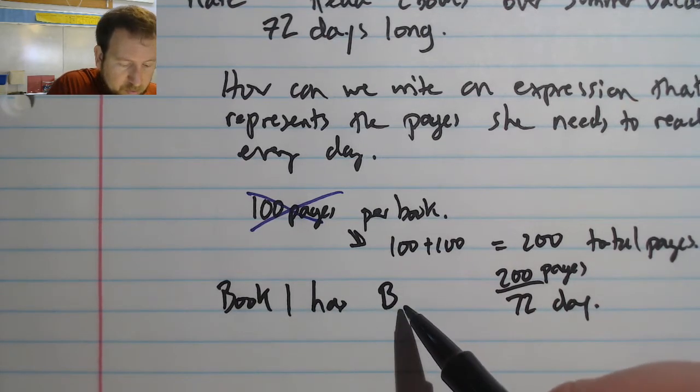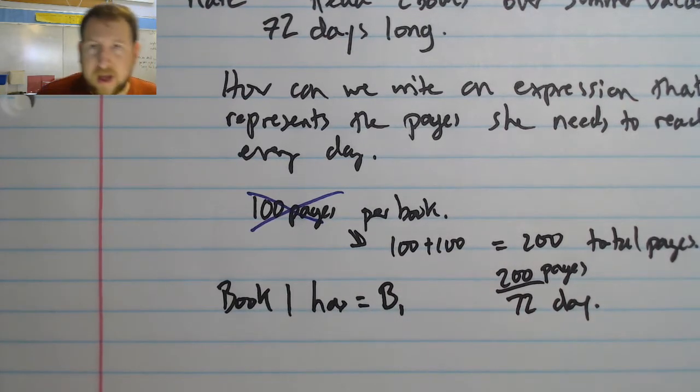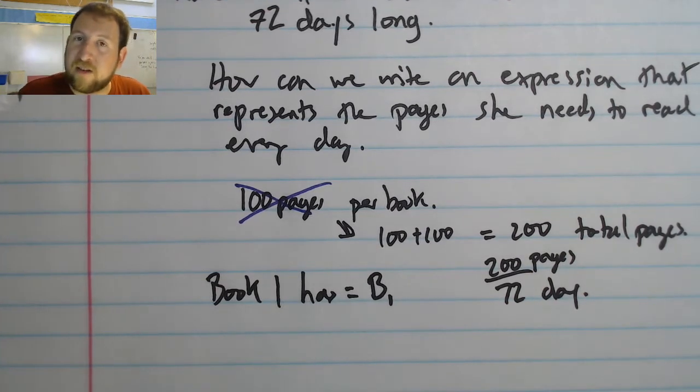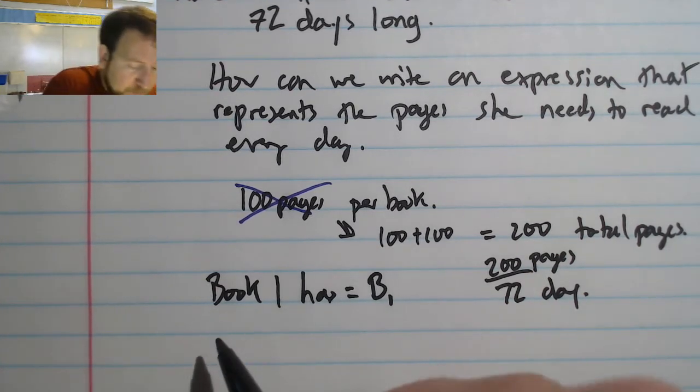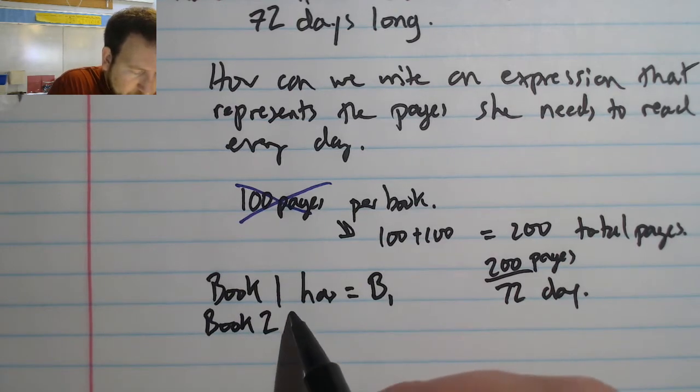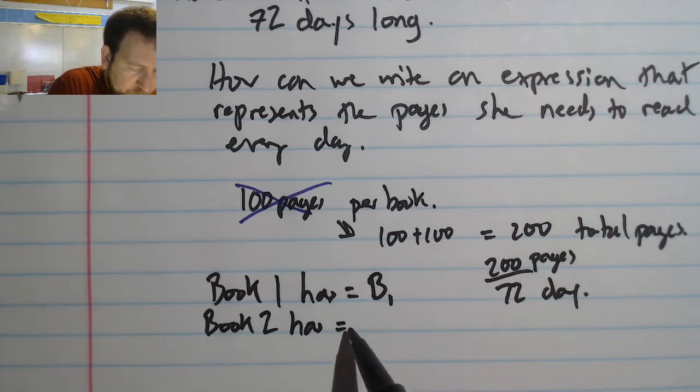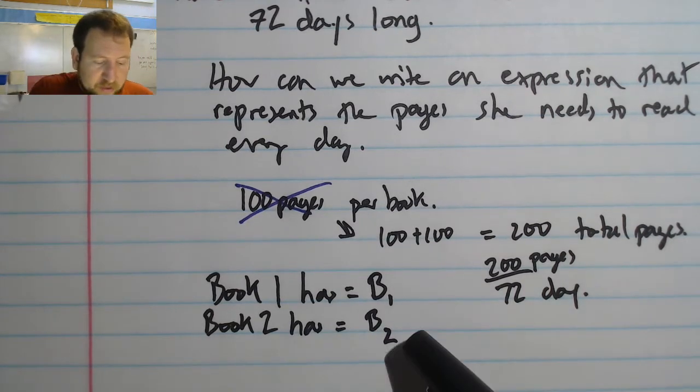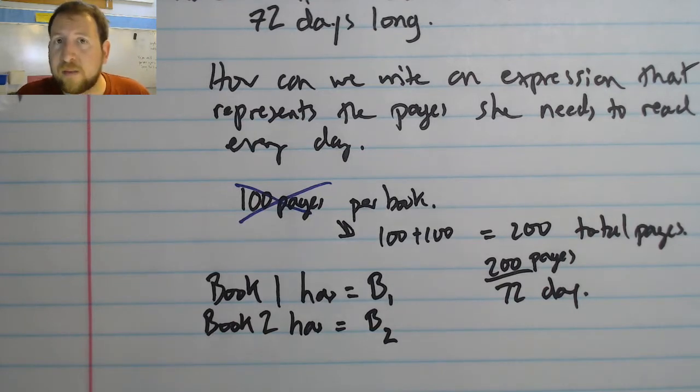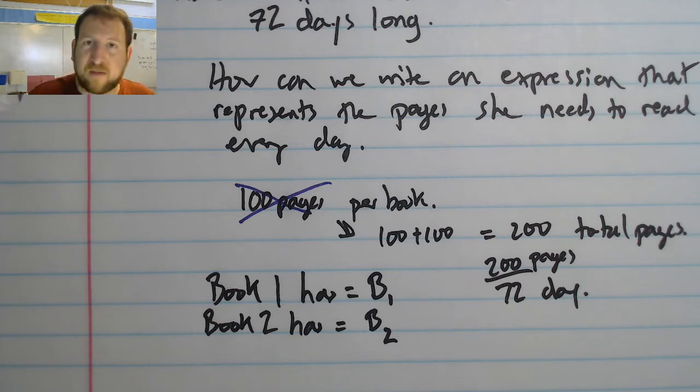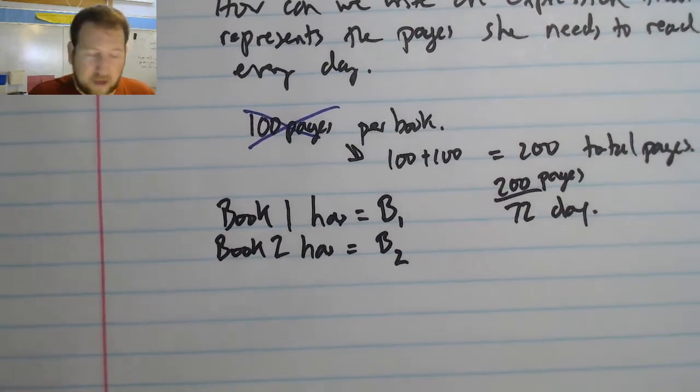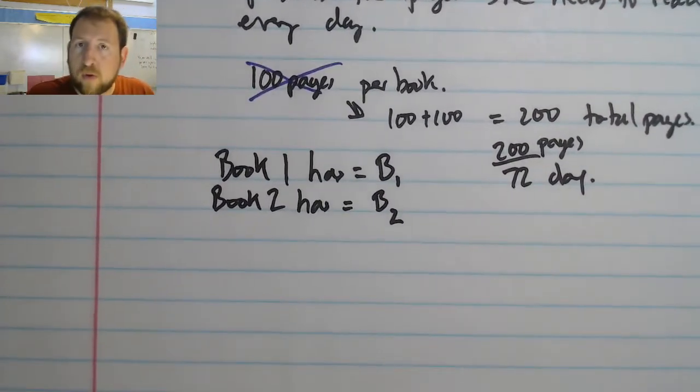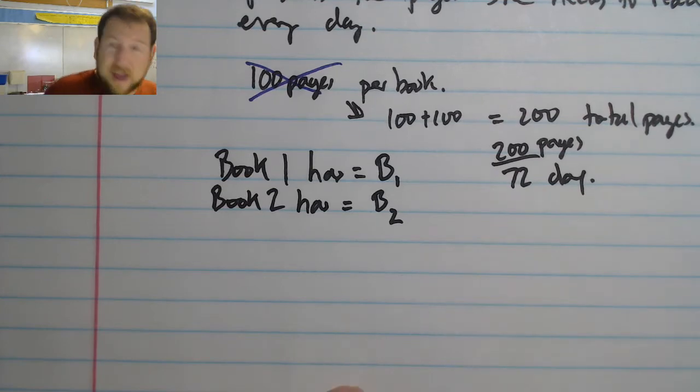And in fact, the only thing we can say is that book 1 has book 1 pages, and I can write that as a variable that represents the amount of pages that are in book 1. And book 2 has book 2 pages, and I call these subscripts. I can denote separate variables as separate things by putting a little tiny number after it, because if I write it with a big number it looks like it's part of the expression.